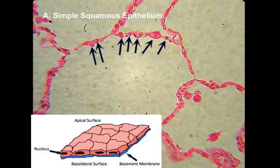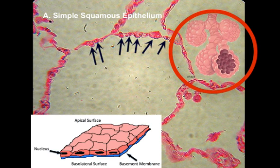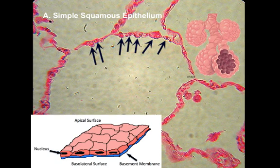Here you see simple squamous epithelium — arrows are pointing to individual cells of this single-layered flat tissue in the lung. You're looking at an air sac of the lung, called alveoli. Simple squamous epithelium is perfect here because gases such as oxygen and carbon dioxide need to diffuse into the blood from these air sacs. Wherever diffusion into or out of an organ is needed, you'll find simple squamous epithelium — also in the tiny capillaries of the circulatory system.